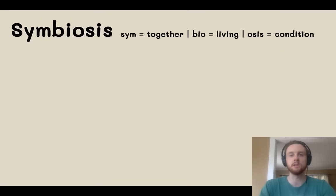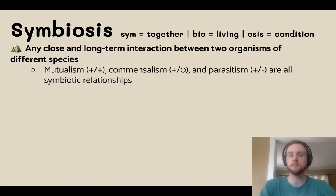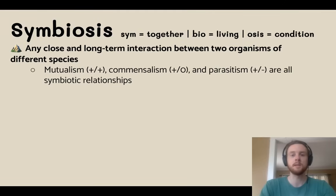Next we have symbiosis, or a symbiotic relationship. The root terms tell us what it means: sym means together, bio means living, and osis means condition or state of being — so it's a state of being where two species are living closely together. We need to remember that symbiosis isn't necessarily good or bad; it's just a long-term interaction between two organisms of different species. It can be mutualistic, commensalist, or even parasitic — parasites and their hosts are considered symbiotic because they live in such close association for a long period of time.